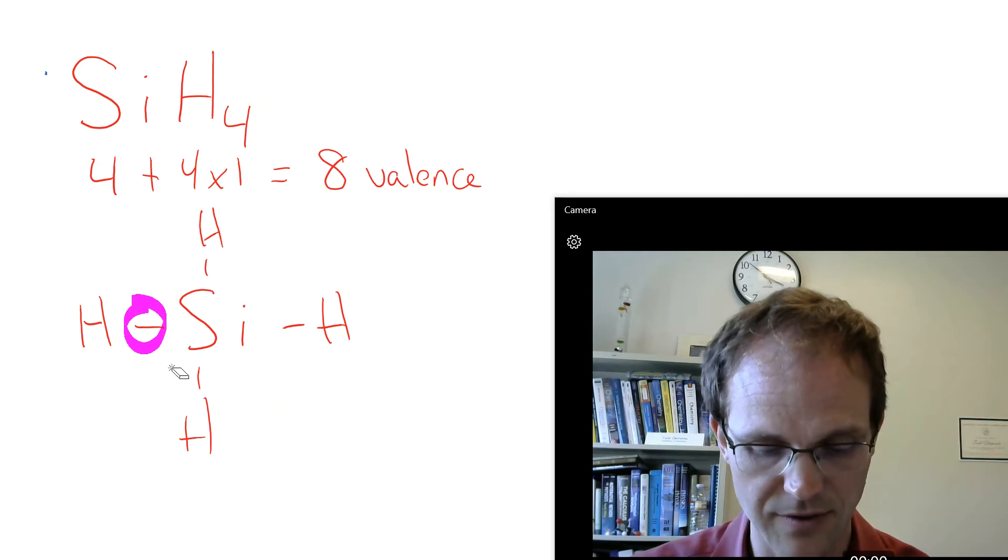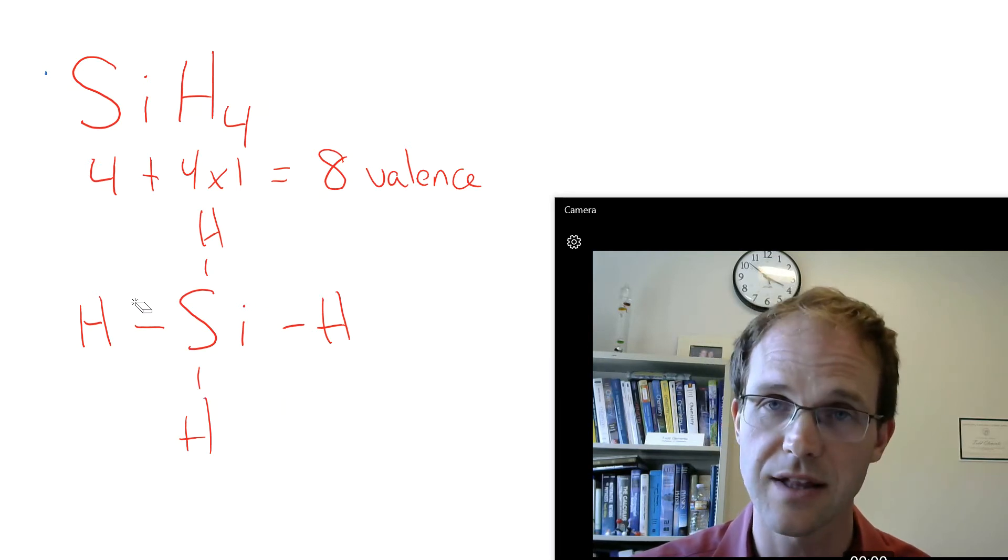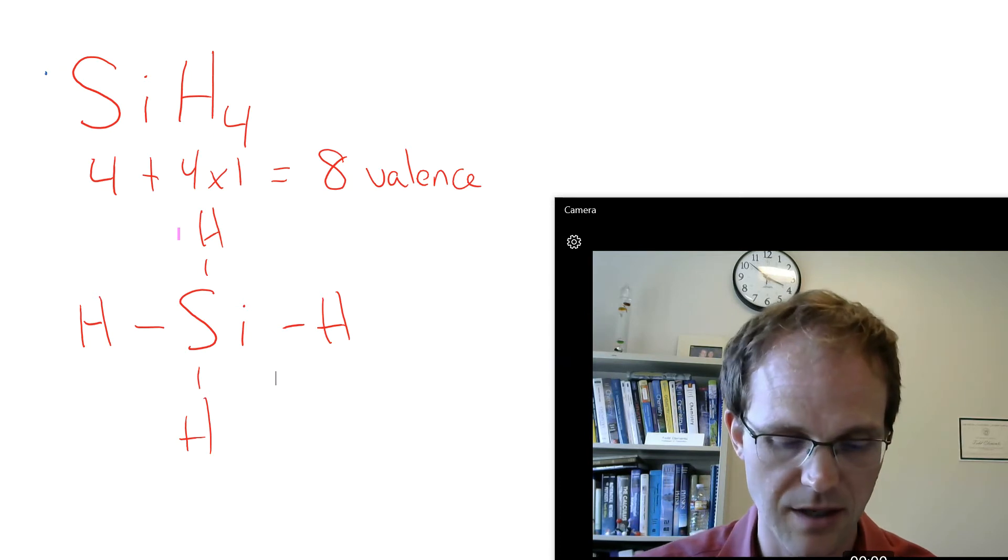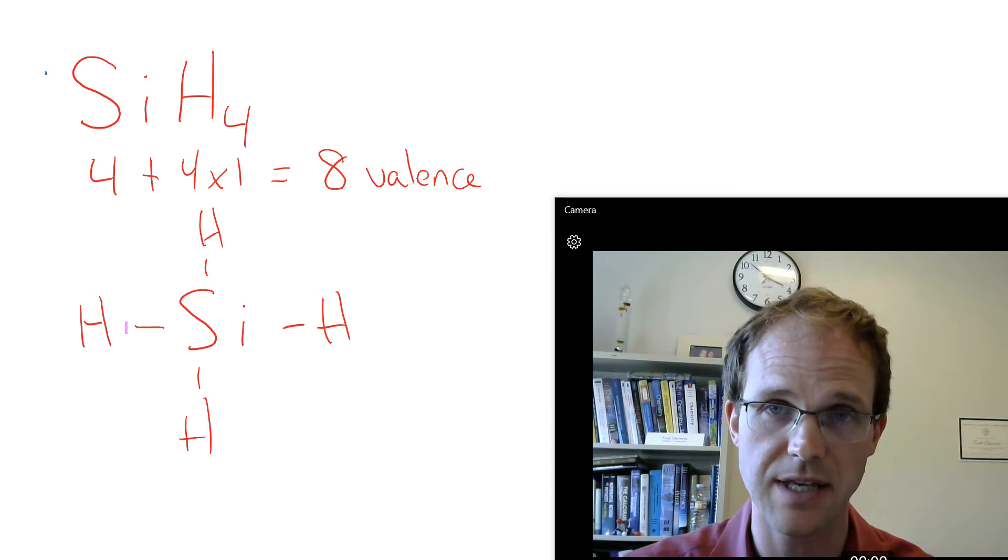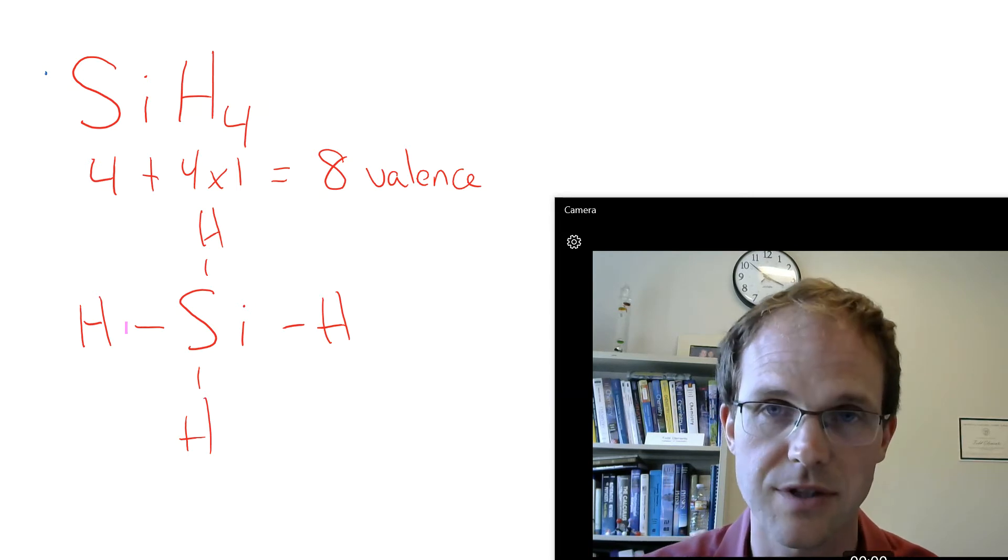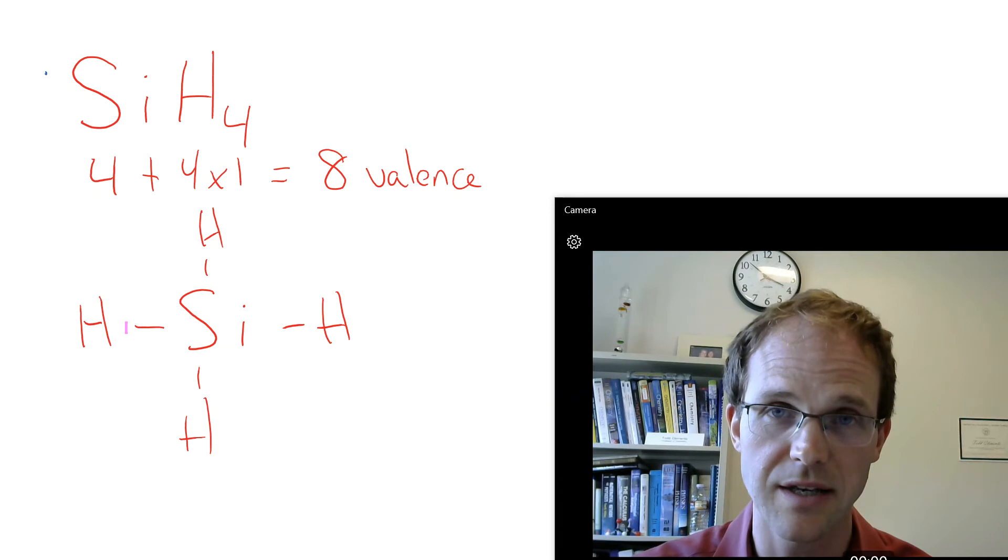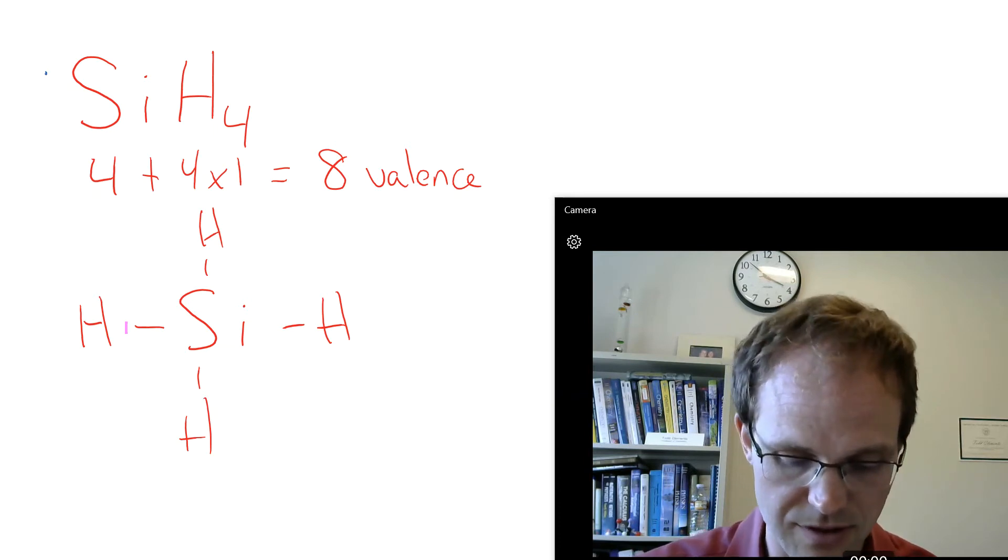And if we have none left, that means we're down to happiness check already. Happiness check. Hydrogens are all happy, they see 2. Silicon's happy, he sees 2, 4, 6, 8 if you go around the circle again, just like we just did. And so we're done. And that's what silicon with 4 hydrogens looks like in the real world, silicon with 4 hydrogens around it.